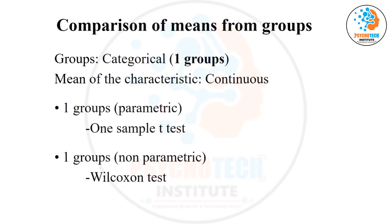We can ask one question here: which test do we use — chi-square test, correlation, or t-test — and why? For example, hemoglobin label in males is 12.2 and hemoglobin label in females is 12.3.